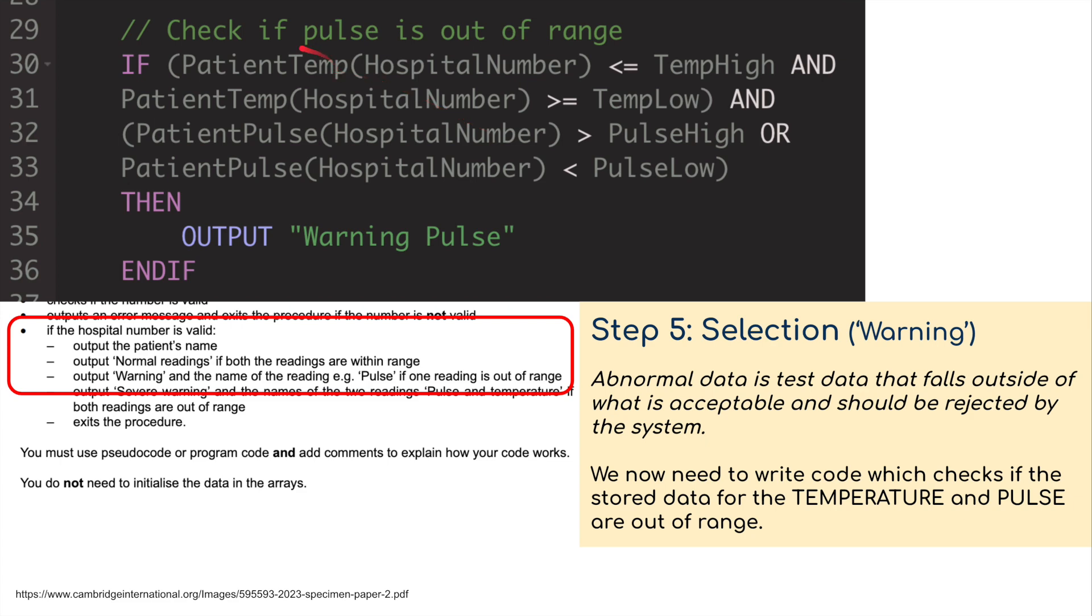I'm going to do the same thing for the pulse. Warning message pulse: this time the temp's okay, it's less than or equal to temp high and greater than or equal to temp low, but it's out of range in terms of pulse. It's higher than pulse high and lower than pulse low. So we're going to get a warning on pulse.